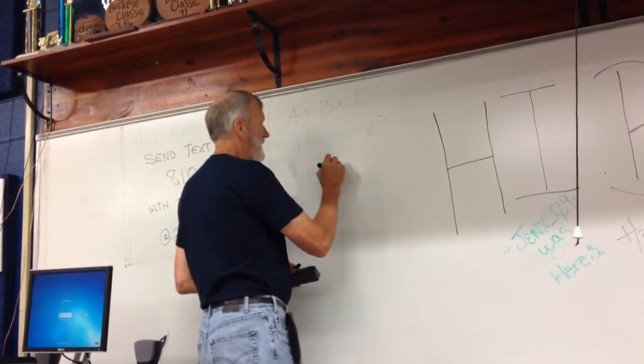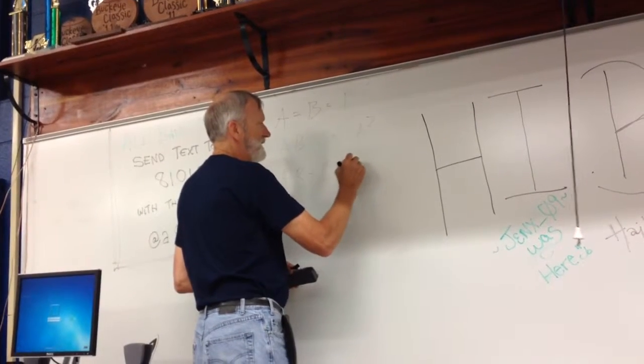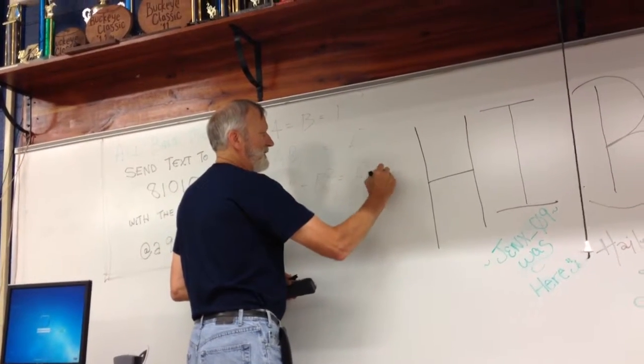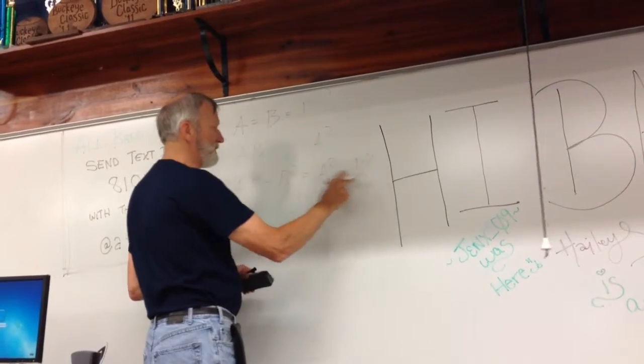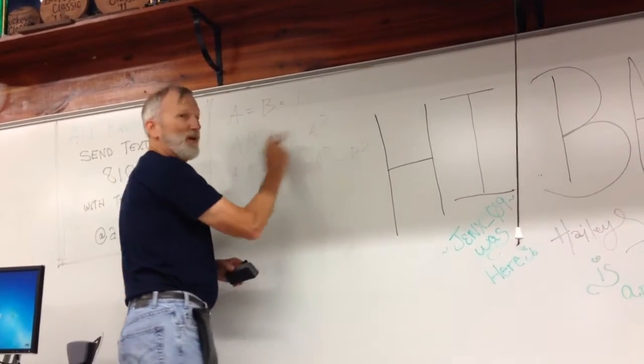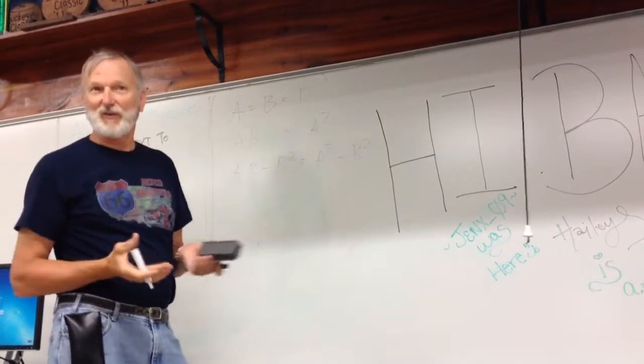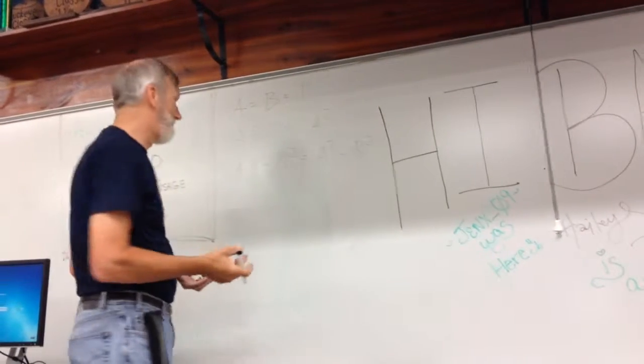A B minus B squared equals A squared minus B squared. I just subtracted B squared on both sides of the equation. As long as I do it to both sides of the equation, it's still right.